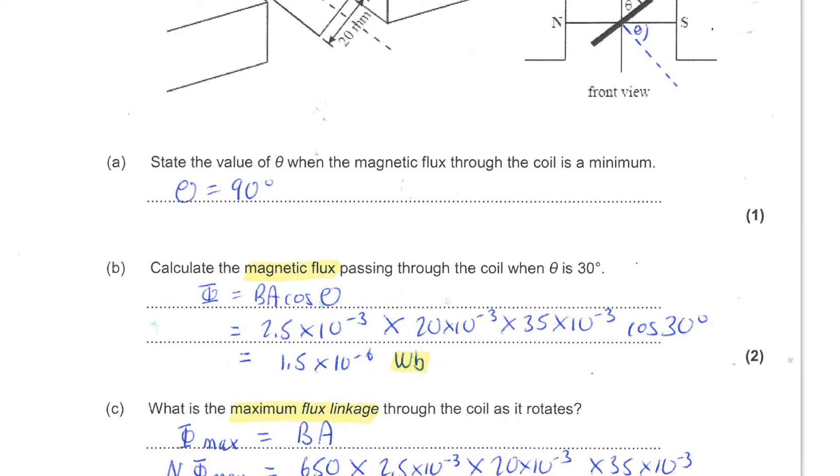Next, you're asked to calculate the magnetic flux passing through the coil when theta is 30 degrees. Now, because you've already done that checking earlier, you're safe to take this equation from the datasheet and use it. So it's straightforward. We have the flux density multiplied by the dimensions of the coil to give the area times cos of 30.